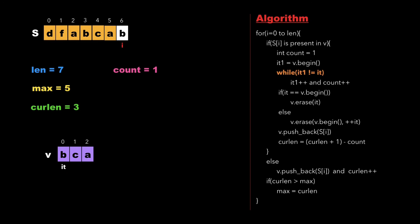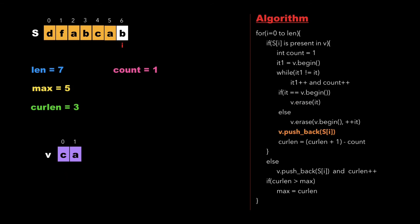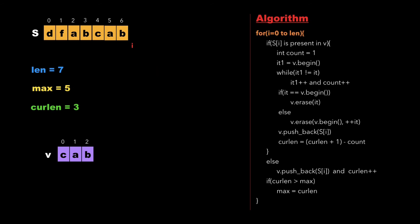We check whether it1 is equal to it - since both iterators point to the same location, we exit the while loop immediately. Since it equals the beginning of the vector, we erase that particular character, which is 'b', from vector v, then push s[6] into the vector. We update current_length as current_length + 1 - count, which is 3. We increment i, which now points beyond the string length, so we exit the for loop and return max. The longest substring with distinct characters is 'dfabc' with length 5.